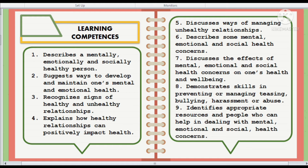Number seven: discusses the causes and effects of mental, emotional, and social health concerns on one's health and well-being. The learners have the knowledge to avoid this kind of concern. They will determine that mental health includes our emotional, psychological, and social well-being. It affects how we think, feel, and act. It also helps determine how we handle stress, relate to others, and make choices. Mental health is important at every stage of life, from childhood and adolescence through adulthood.